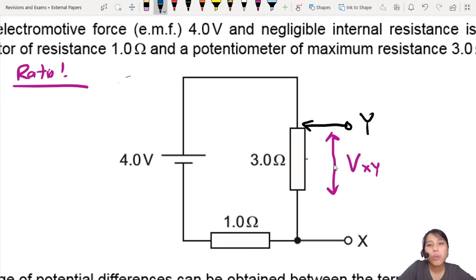How shall we ratio? What shall we ratio? We want to find VXY, correct? There's a few ways you can ratio. You could ratio VXY against VR, but then we don't know what's VR.